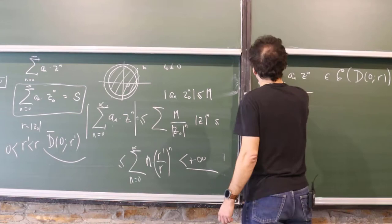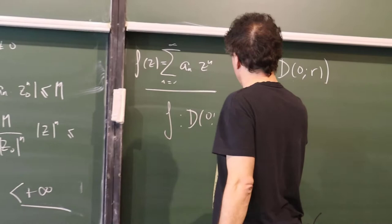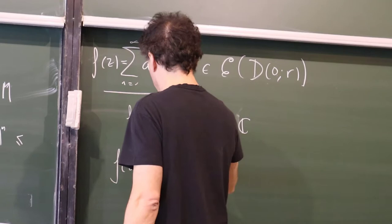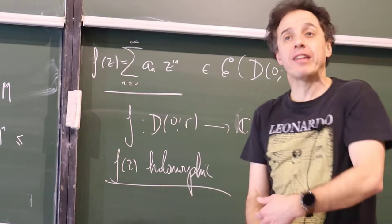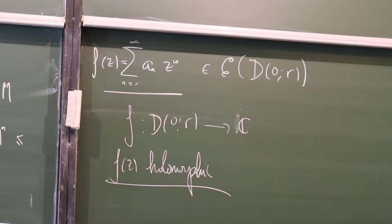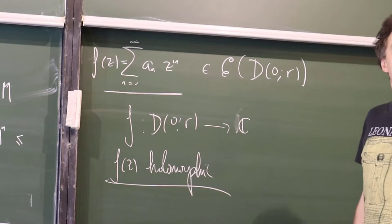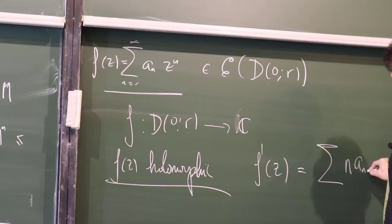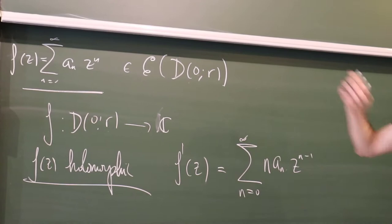Not only continuous — this function can also be differentiated. A function defined on a disk by a power series is in fact holomorphic. You can compute the derivative directly by the usual rules. Just as in the real case, the derivative can be computed term by term: f'(z) = ∑ n·aₙ·zⁿ⁻¹.